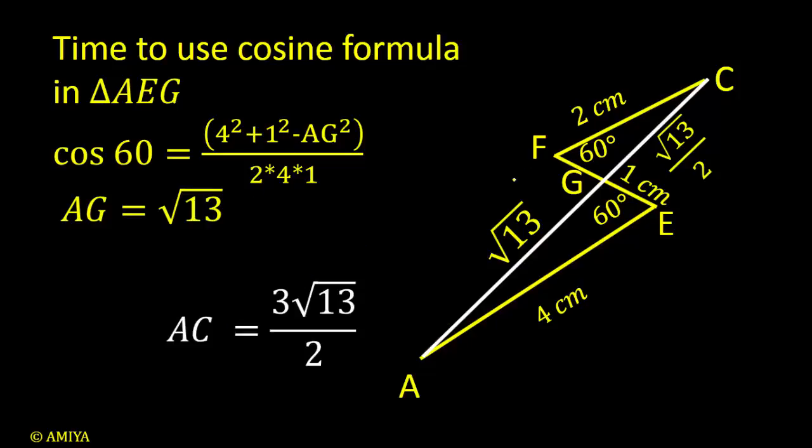So can we say AC is the summation of these two? That would be 3 root 13 by 2. So we got what we required, we got AC.